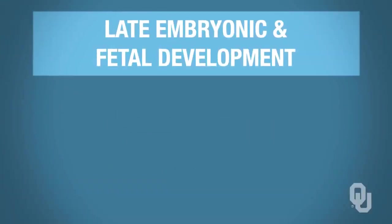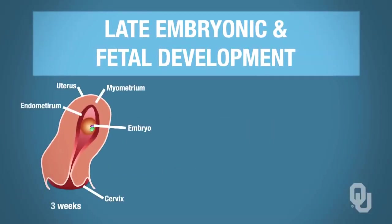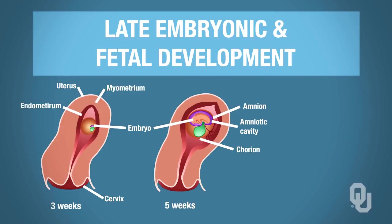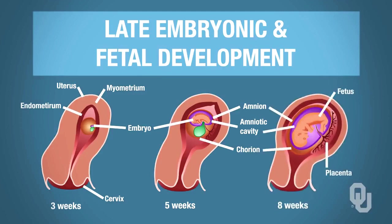In late embryonic development, at three weeks you can see what the embryo looks like, and at five weeks you can make a comparison. At five weeks, the trophoblast actually thickens, and when the trophoblast thickens it becomes the chorion, and the chorion encapsulates the embryo. By eight weeks, now we have what we call a little human—it resembles a human, and now it's appropriate to call it a fetus.